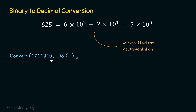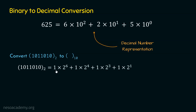We multiply each digit by its positional weight: 0 multiplied by 2 to the power 0, 1 multiplied by 2 to the power 1, 0 multiplied by 2 to the power 2, 1 multiplied by 2 to the power 3, and so on. Note that we do not need to mention terms where the digit is 0, since 0 multiplied by anything is 0 and contributes nothing to the sum. So we get 1 times 2 to the power 6, plus 1 times 2 to the power 4, plus 1 times 2 to the power 3, plus 1 times 2 to the power 1, which gives 64 plus 16 plus 8 plus 2, equal to 90.